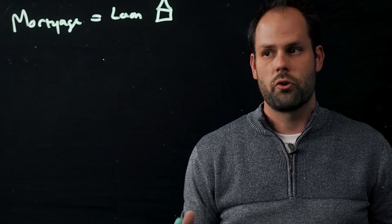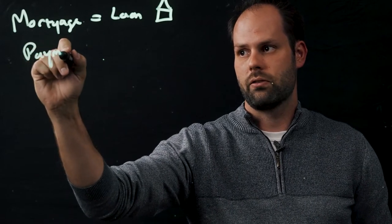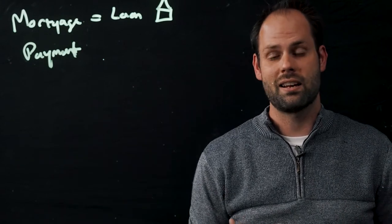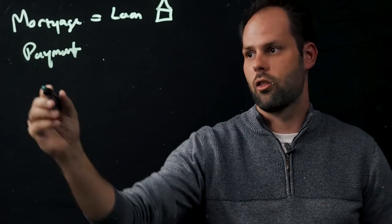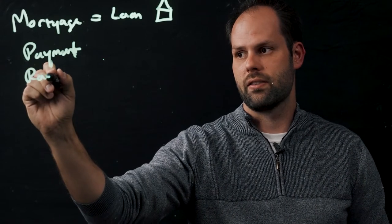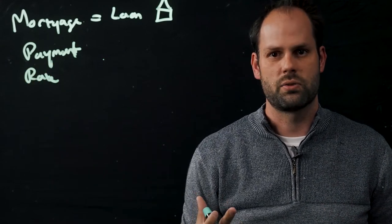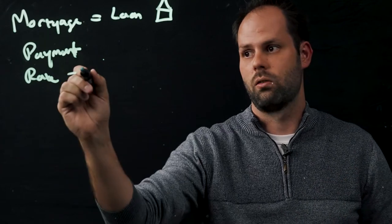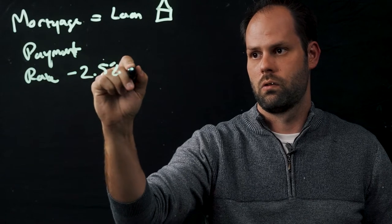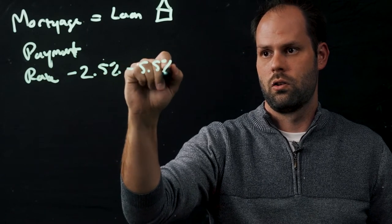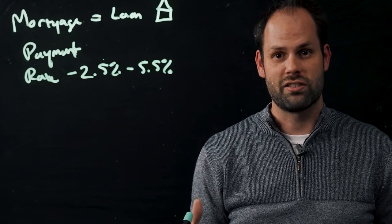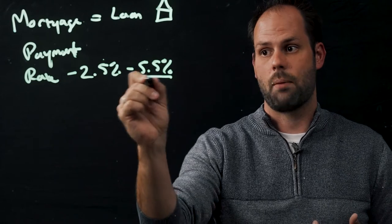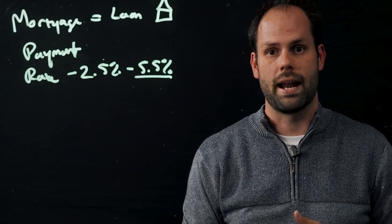Now, one of the first things associated with your mortgage is your payment. This is really just how much we're paying the bank each and every month in exchange for them lending us the money to actually purchase a property. Another big term is what's the rate, the interest rate that we're paying the bank? This is oftentimes somewhere between two and a half all the way up to five and a half percent is what we're seeing now.